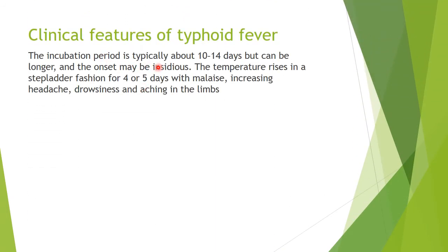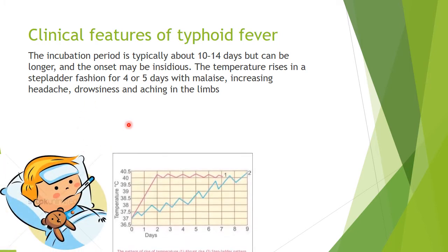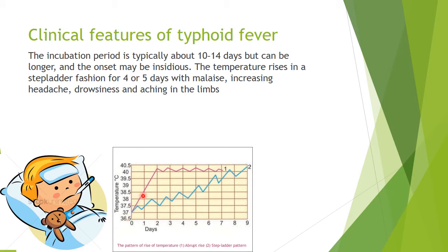After 10 to 14 days, Jack will show a fever. The fever will be a stepladder type, meaning the temperature will increase, reach a peak, then decrease, and again increase to a new peak and decrease — continuing to rise to new peaks, giving a stepladder pattern. Compare this blue stepladder pattern with the red abrupt rise in temperature — you can clearly see the difference.